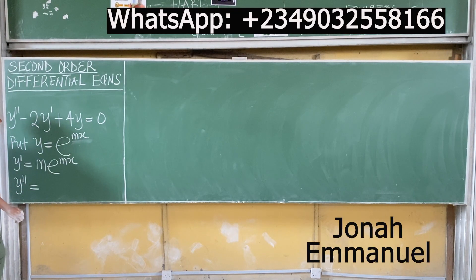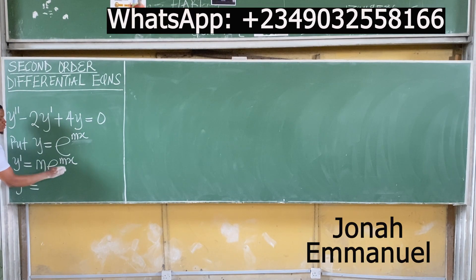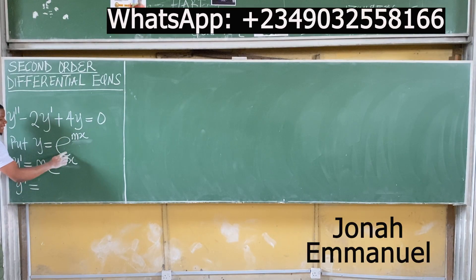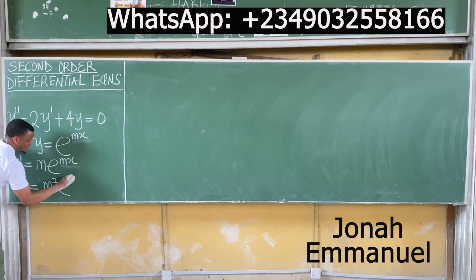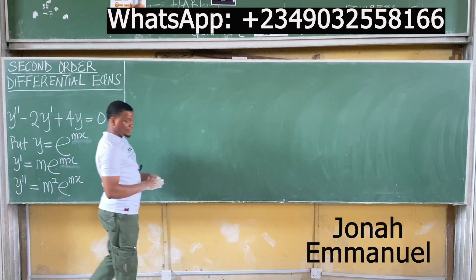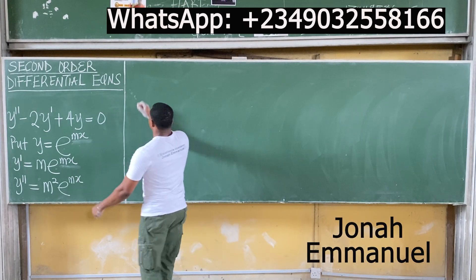For y'', differentiate y' again. The m in front is a constant, so keep it and focus on differentiating e^(mx) again. Differentiating the power mx gives another m, so m times m gives m². Therefore y'' equals m²·e^(mx).